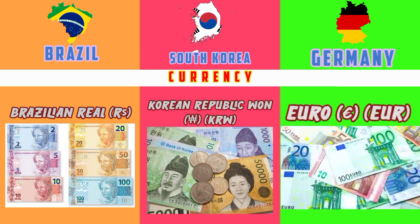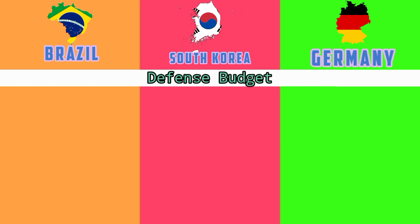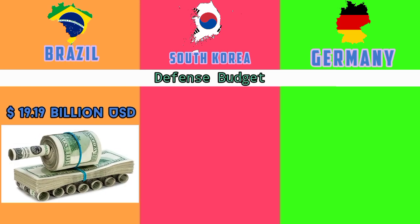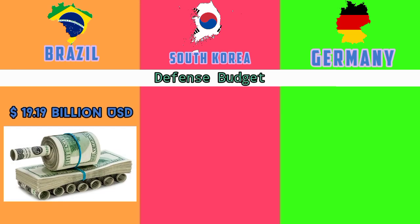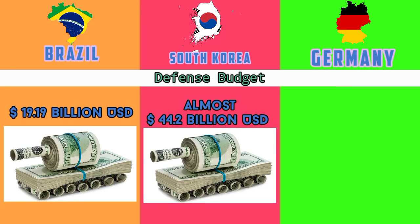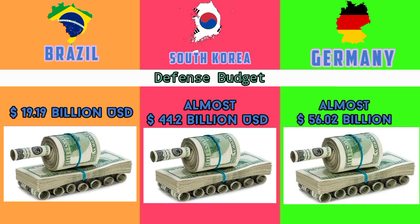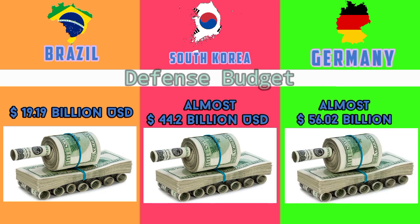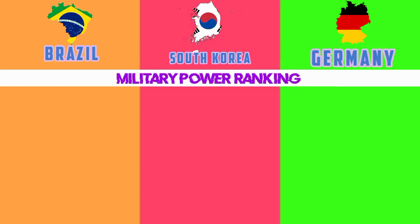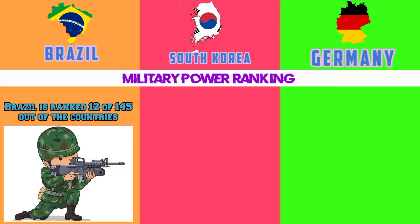GDP nominal: Brazil 2.081 trillion; South Korea 1.721 trillion; Germany 4.031 trillion. Currency: Brazilian real, South Korean won, euro. Defense budget: Brazil almost 19.19 billion; South Korea almost 44.2 billion; Germany almost 56.02 billion. Military power ranking: Brazil is ranked 12 out of 145 countries.